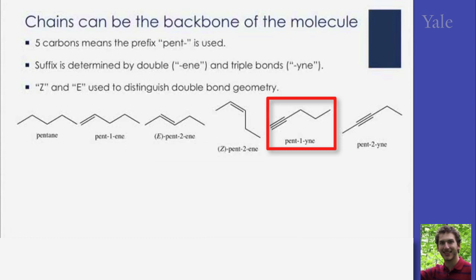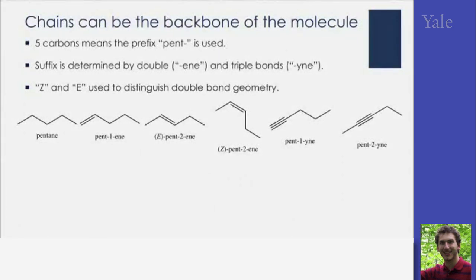We use the suffix "-ine" to indicate a triple bond. Again, the triple bond can be at the end or in the middle of the chain, but unlike the double bond, the triple bond has only one geometric form. It's perfectly linear, so we don't need to use any extra terminology.